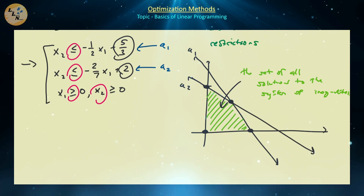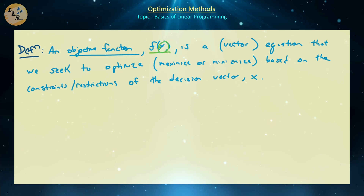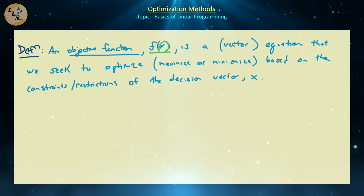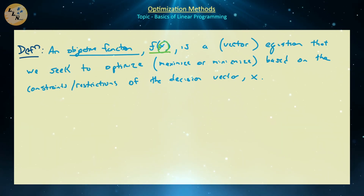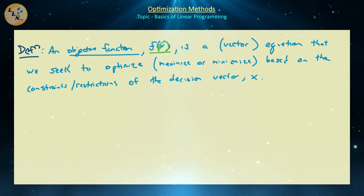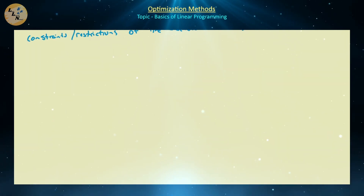Let's give a brief introduction to what an objective function actually is. An objective function, denoted f(x), takes x as a vector containing all decision variables x1 through xn — not a classical pre-calculus variable, but a vector function. The right-hand side is some statement revolving around x1 through xn. This functional is a statement we seek to optimize, where optimize could mean maximization or minimization, based on the constraints and restrictions on the decision vector x.